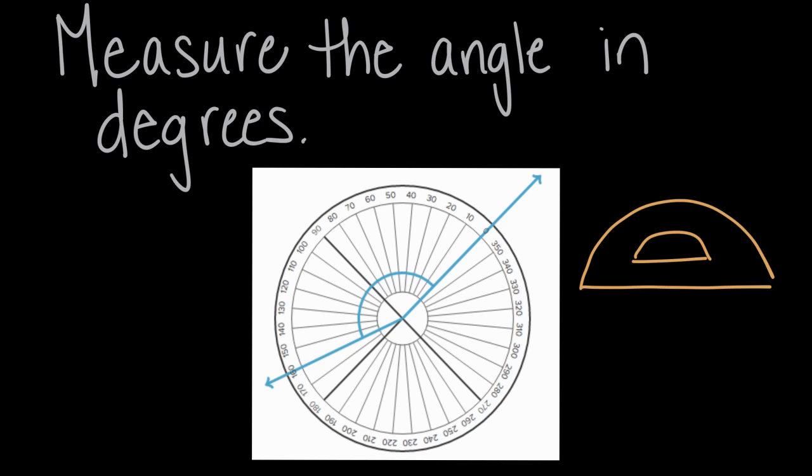Now the way we're gonna measure this angle is the same way we would on a semicircle protractor. The first thing we want to do is make sure one of our rays lines up to zero. So here's one of our rays, and it's lining up to zero on the protractor. So that's nice, it's already lined up for us.